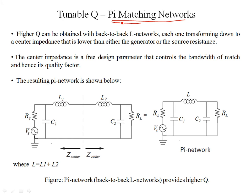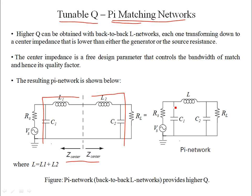Pi matching networks differ from simple L matching networks in that you can tune the parameter Q, the quality factor associated with the matching. You can control the overall frequency response because you have a free parameter — the central impedance in the pi matching network. This pi topology comes from two L matching networks placed back-to-back.